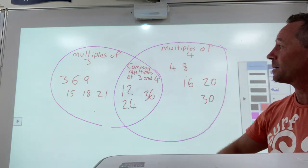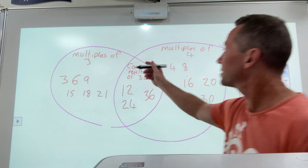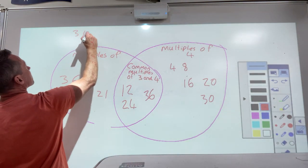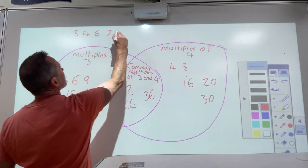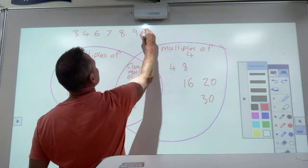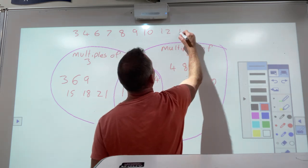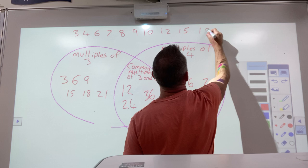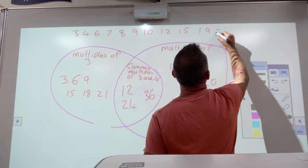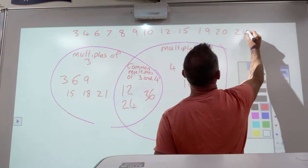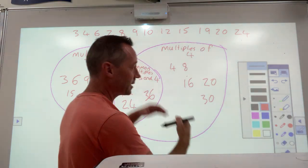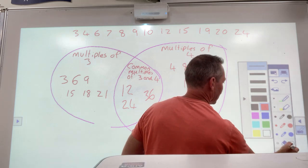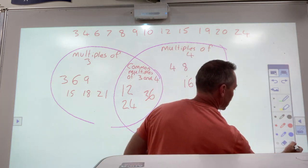Is there any other that you can think of? Yep, 36. 36 would go in there as well, even though we haven't got up to it on the multiples of 3. It would go in there. And you'll probably find that sometimes you might be given a list of numbers, so for example if I had 3, 4, 6, 7, 8, 9, 10, 12, 15, 19, 20, 24, and so on.